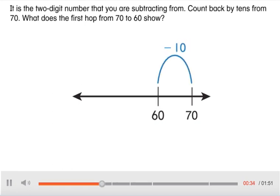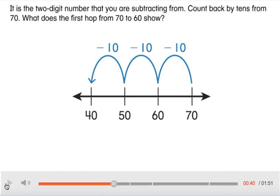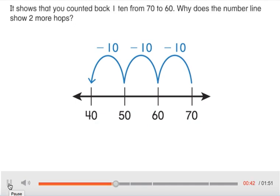Count back by tens from 70. What does the first hop from 70 to 60 show? It shows that you counted back one ten from 70 to 60.